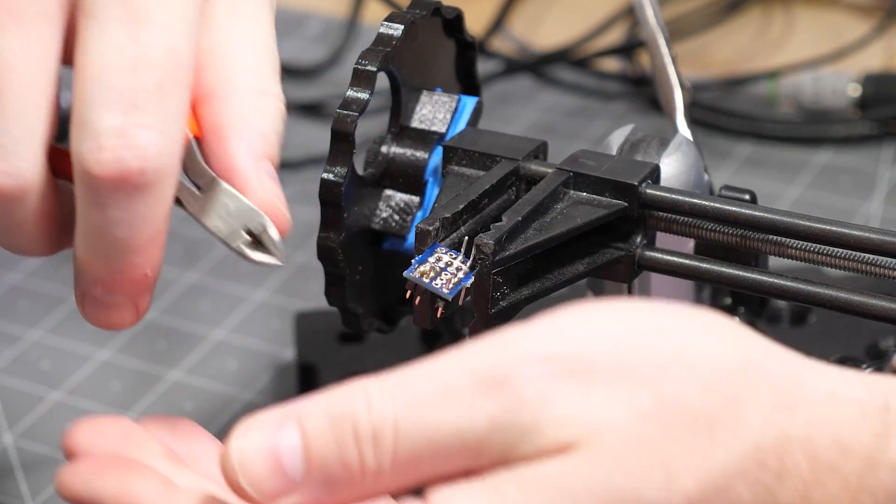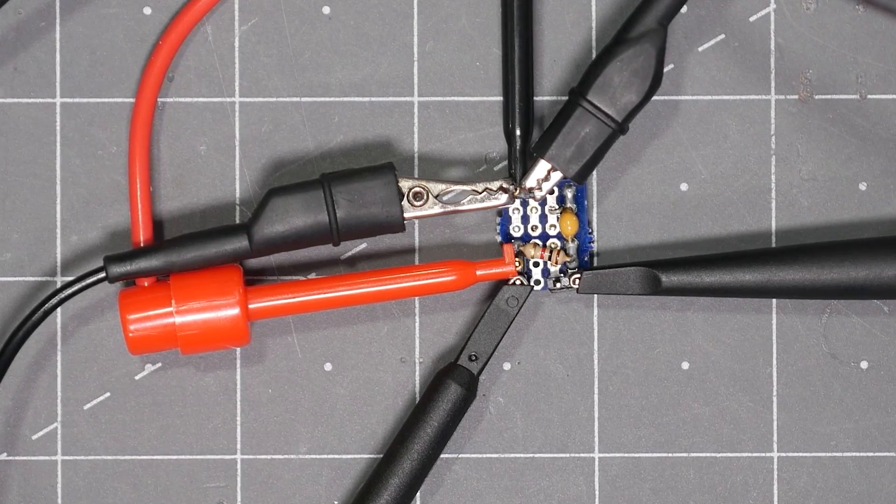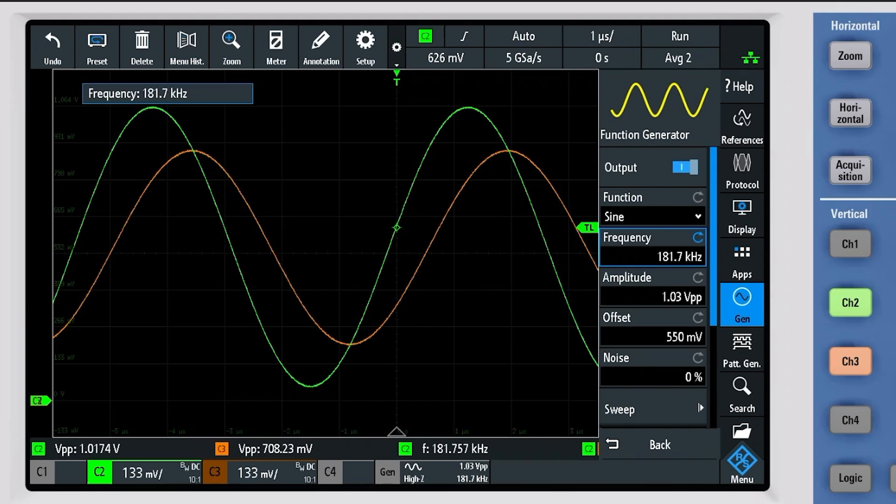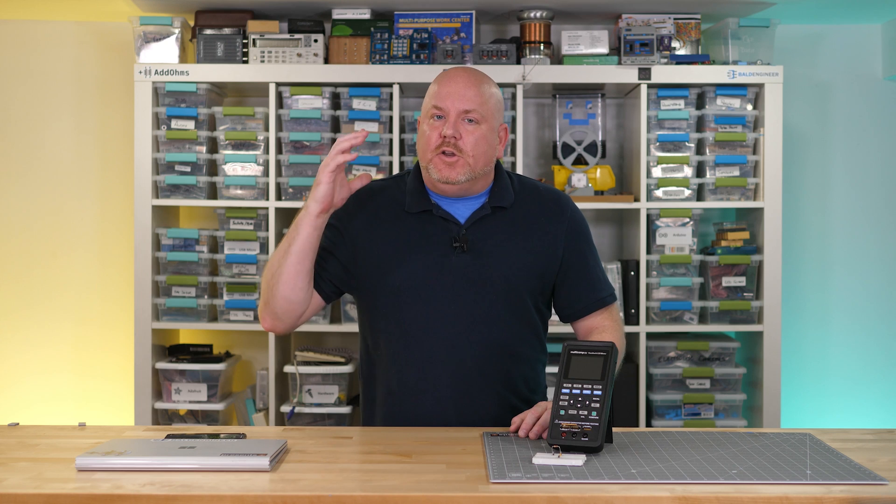Just like before, the waveform generator is providing the input, with the scope measuring both the input and output. With just a minor adjustment to the input frequency, we can now see the negative 3 dB, or cutoff point, is 182 kHz. Can you believe the difference it made to just move to a PCB?